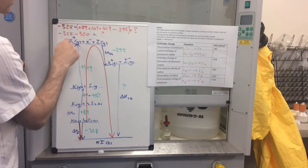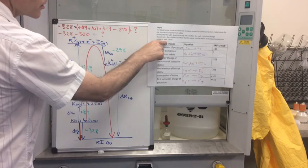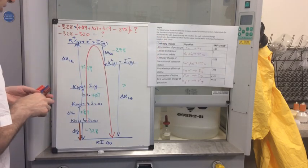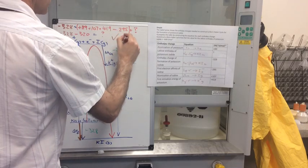So minus 328 minus 320 is the lattice enthalpy, the unknown. And do that in your head, 648. So that's minus 648 kilojoules per mole. And we've done it.